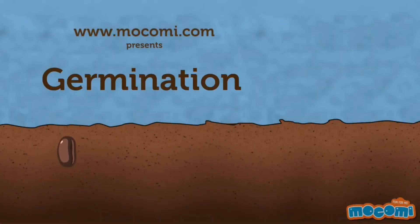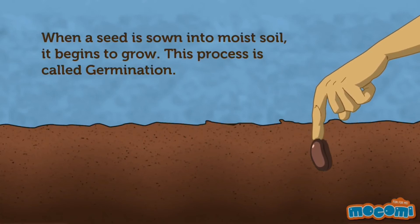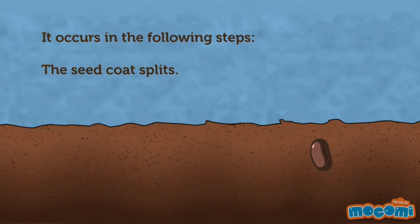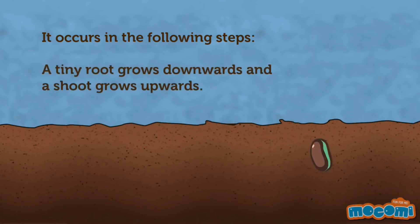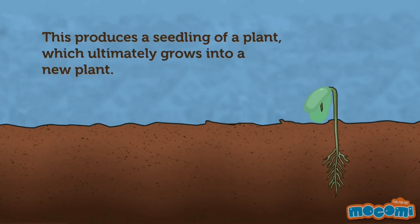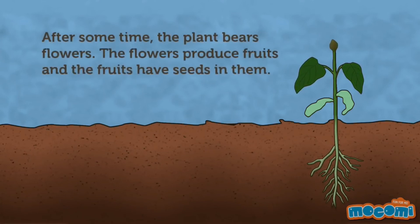What is germination? When a seed is sown into moist soil, it begins to grow. This process is called germination. It occurs in the following steps: the seed coat splits, a tiny root grows downward, and a shoot grows upward. This produces a seedling.